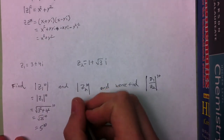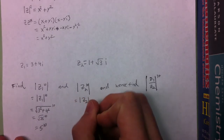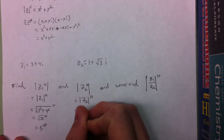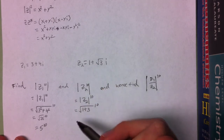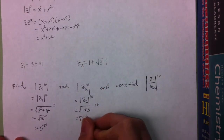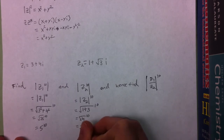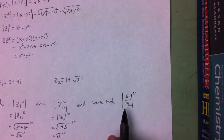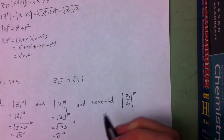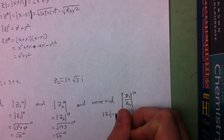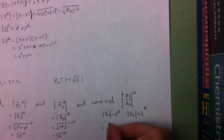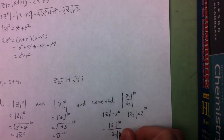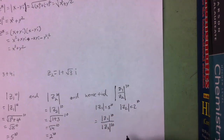For the modulus of z sub 2, we do the same thing. It's equal to the modulus of z sub 2 to the 10th power, which is the square root of 1 plus 3, to the 10th — because the square root of 3 squared, the square and square root cancel each other — giving us the square root of 4 to the 10th, which is 2 to the 10th. Then for z sub 1 over z sub 2 to the 10th, we know the modulus of z sub 1 is 5 to the 10th and the modulus of z sub 2 is 2 to the 10th. This equals the modulus of z sub 1 to the 10th divided by the modulus of z sub 2 to the 10th, because the property above tells us we can do that.